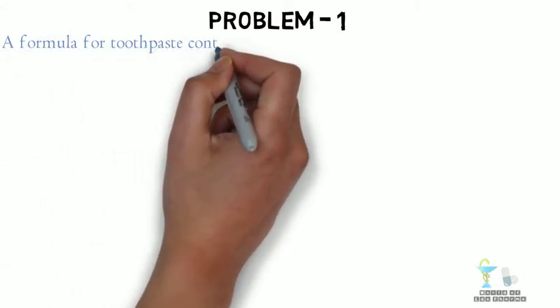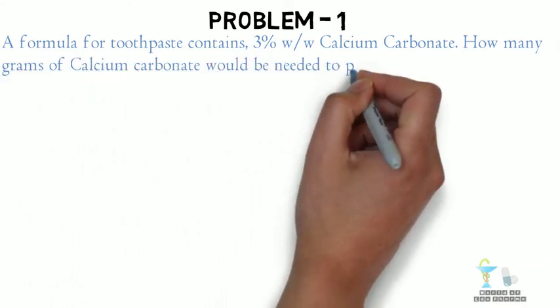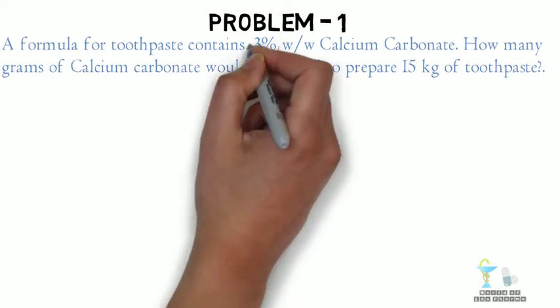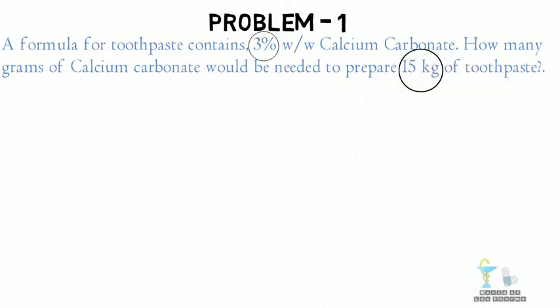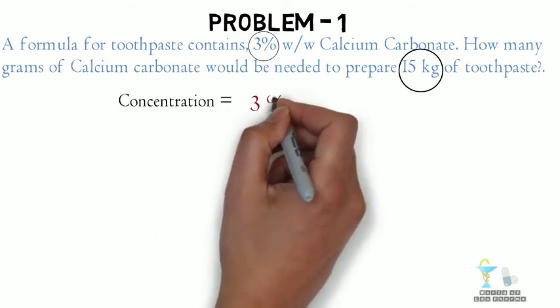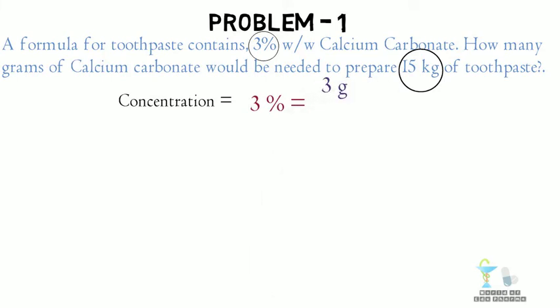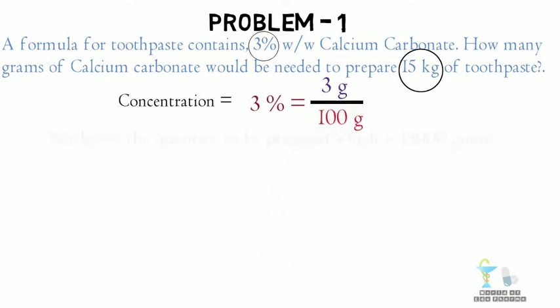A formula for toothpaste contains 3% weight by weight calcium carbonate. How many grams of calcium carbonate would be needed to prepare 15 kilograms of toothpaste? The data given: calcium carbonate is 3%, and the quantity of preparation is 15 kilograms or 15,000 grams. In the problem, calcium carbonate is 3% weight by weight, which means 3 grams divided by 100 grams.